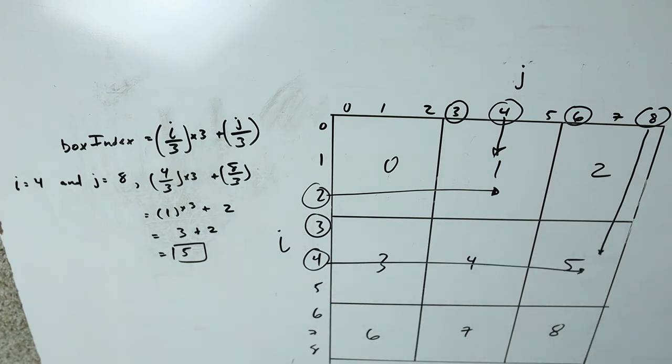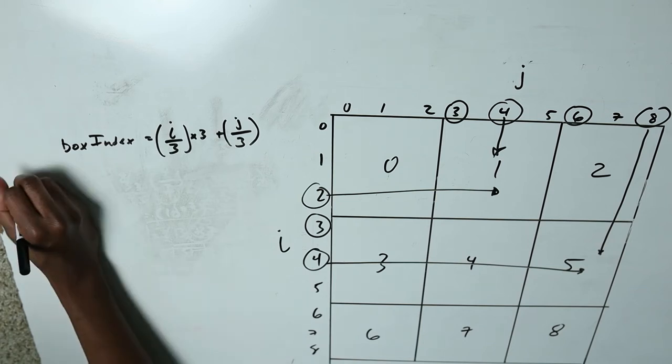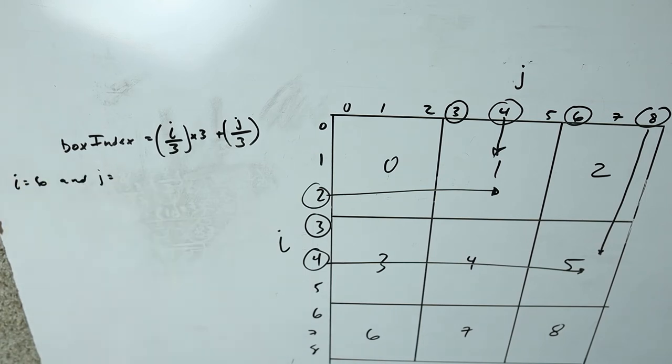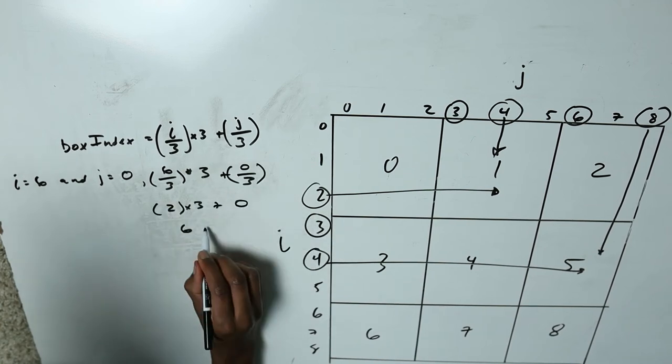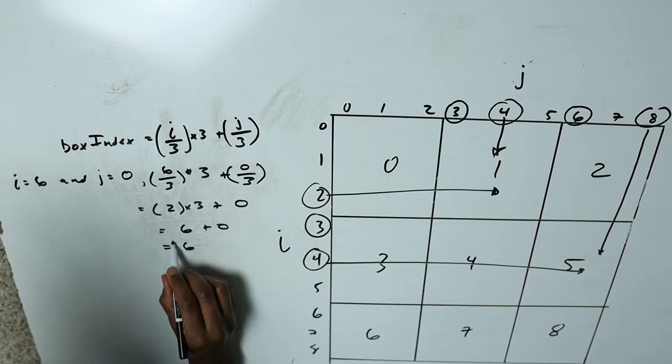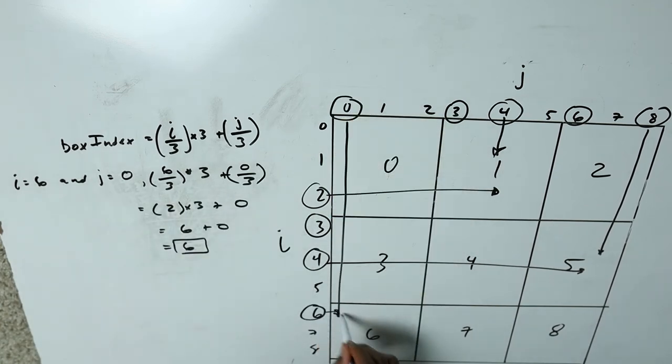For the bottom row test: j equals zero and i equals six. That gives us two times three plus zero, which equals six. It works. This is probably the hardest breakdown I've ever done, but that's essentially how I break down these problems — I have to use a visual to get through it.